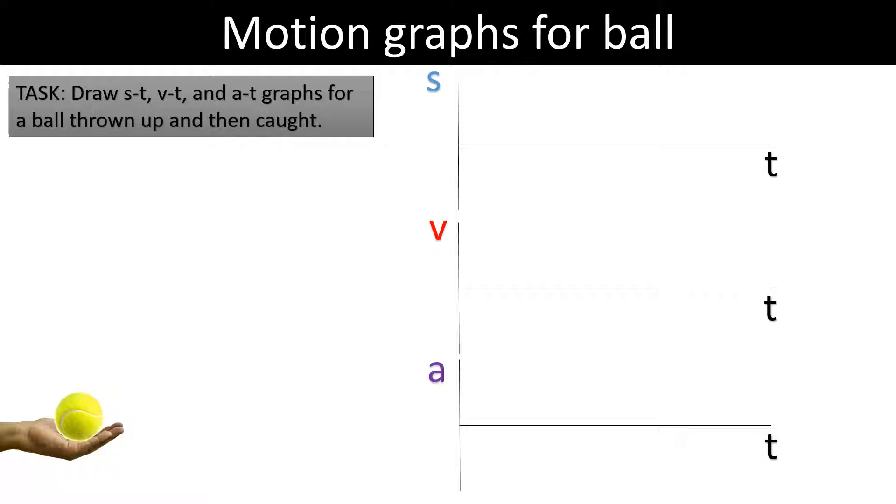So first of all, displacement. The ball is thrown up and the ball will move away from the hand and then back towards its starting point. So the displacement will always be in this case positive because it never goes below its starting point if we're using the convention of up as positive, down as negative, which is pretty normal in physics problems.